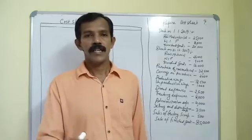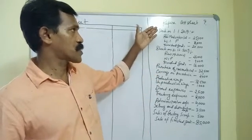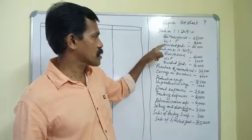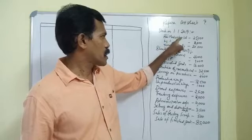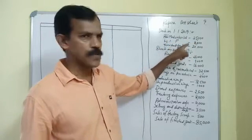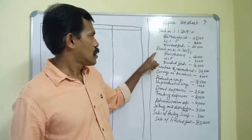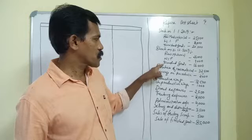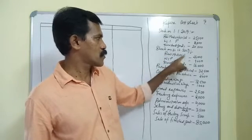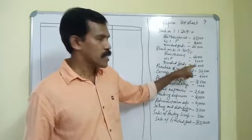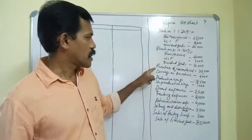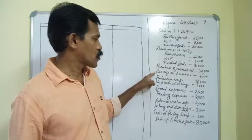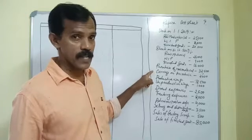This is the problem. Our intention is to prepare a cost sheet. Our problem starts with opening stock on 1-1-2019: opening stock of raw material 25,000, work in progress 8,000, and finished goods 20,000. Closing stock on 31st December 2019: closing stock of raw material 26,000, closing stock of work in progress 9,000, and closing stock of finished goods 16,000. We also have purchase of raw material and carriage on purchase, which will also form part of our cost of raw material consumed.